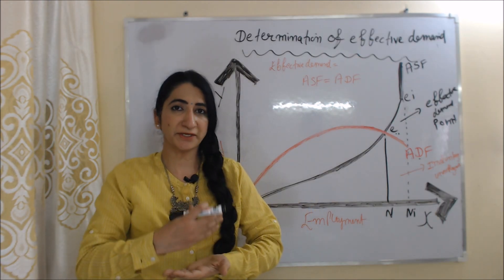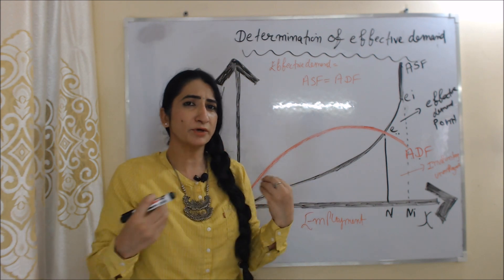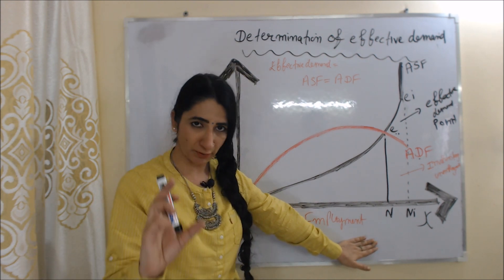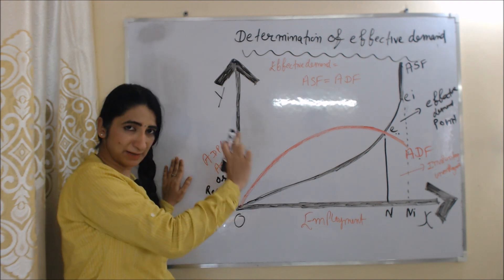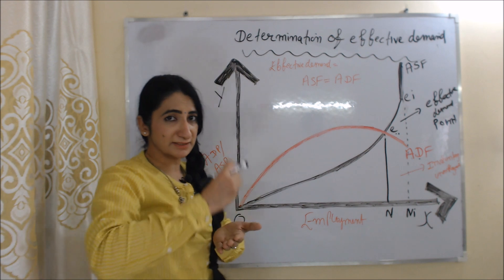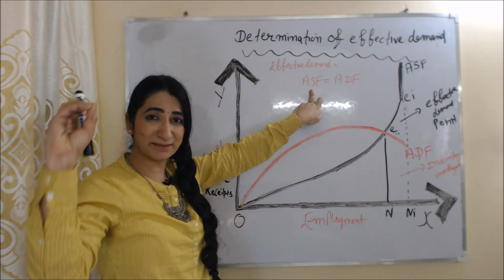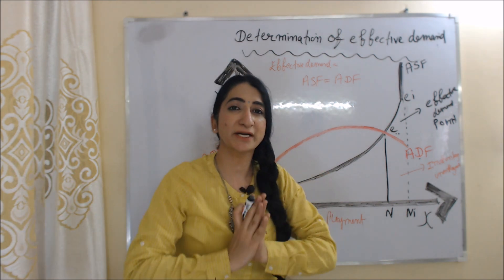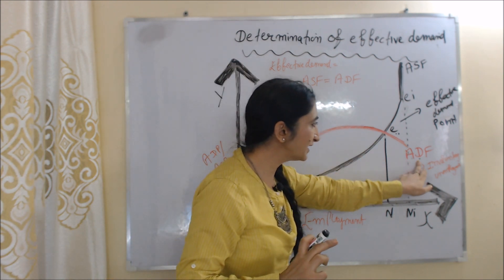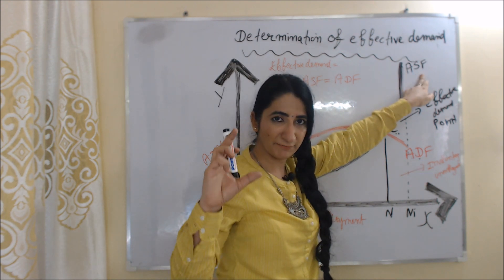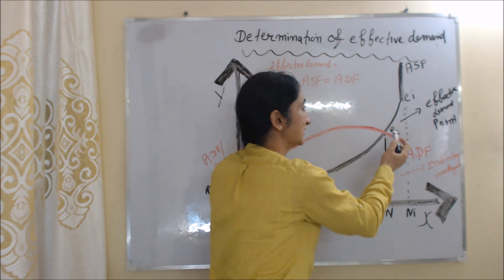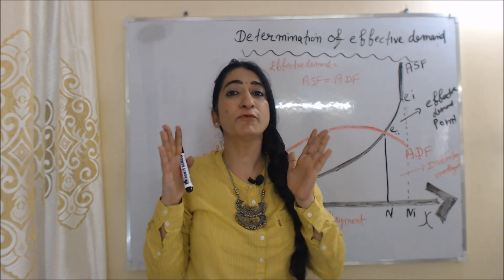As we discussed earlier, effective demand plays a very important role in this theory. Now we are going to talk about the determination of effective demand. In this diagram, on the x-axis we have employment, and on the y-axis we have aggregate demand price and aggregate supply price — or we can say receipts. Effective demand is the point where your aggregate supply function is equal to aggregate demand function. In this diagram, ADF is the aggregate demand function and ASF is the aggregate supply function. At point E, aggregate demand function equals aggregate supply function, so point E is the effective demand point.